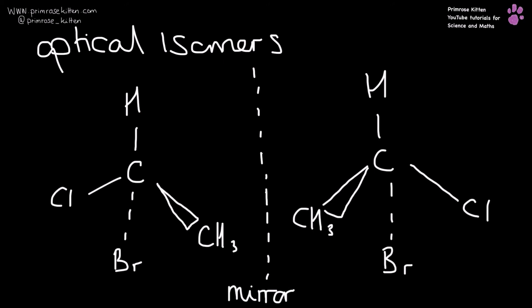Now the last one we need to know for our stereoisomers is optical isomerism. And this is where you have four different groups attached around a main central carbon. And these make mirror images of each other. And because they make mirror images of each other, it means they are non-superimposable.